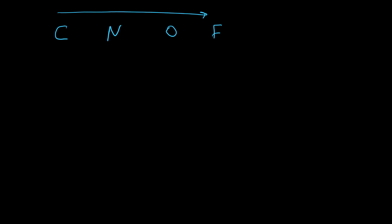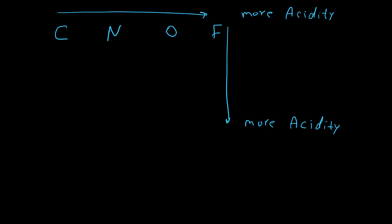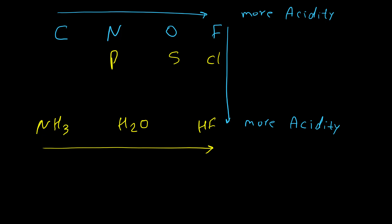There are different parameters that can change the acidity or basicity of a molecule. The first one is the type of atoms. In the periodic table, from left to right acidity increases. Also from top to bottom in each group, acidity again increases. For example, we know that ammonia is a base, water is a neutral molecule, and HF is an acid. This is exactly based on this trend — from left to right in the periodic table we have more acidic compounds. So this effect is the same in organic chemistry.